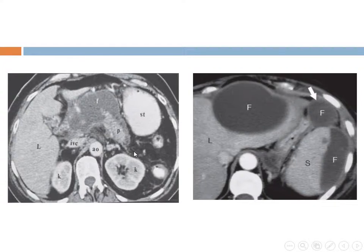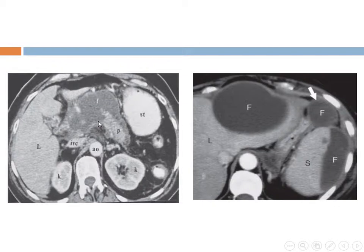These are some examples of complications of acute pancreatitis. Here we have contrast CT. The axial image shows only a small portion of pancreas is enhanced and taking contrast, while the majority is not taking contrast — that's necrotizing pancreatitis, which is also associated with fluid collection. Here we have another complication: fluid collection in the left lobe of liver, in the peritoneal and perisplenic region.